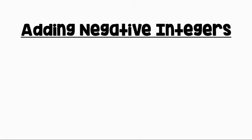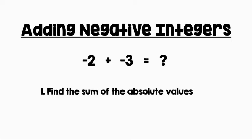Let's take a look at our rule for adding negative integers. We're going to take that same expression from the first example: negative 2 plus negative 3. First, we will find the sum of the absolute values. So let's take the absolute value of negative 2 and negative 3. We have 2 plus 3, which gives us 5.